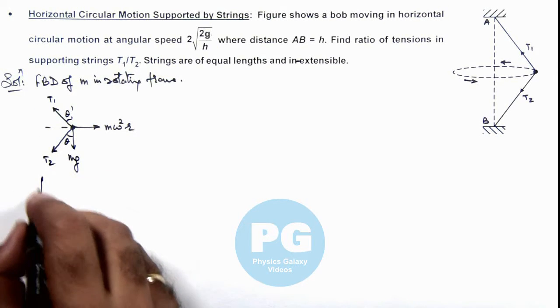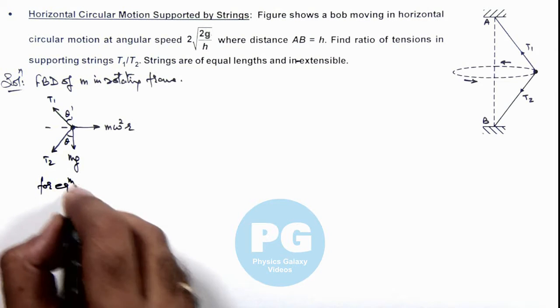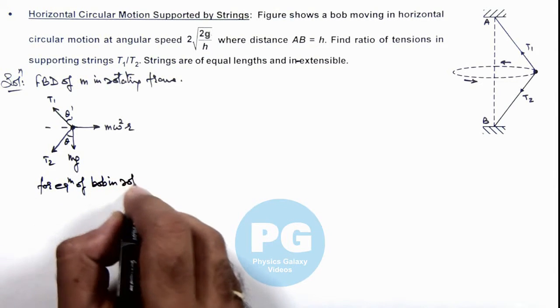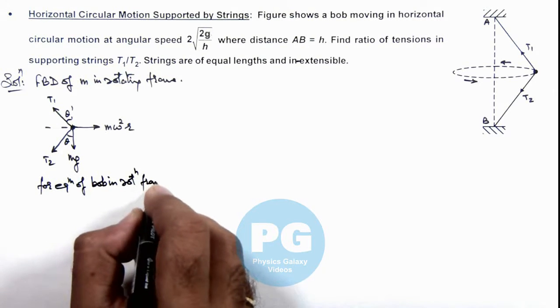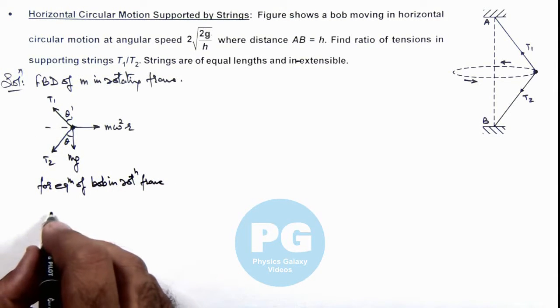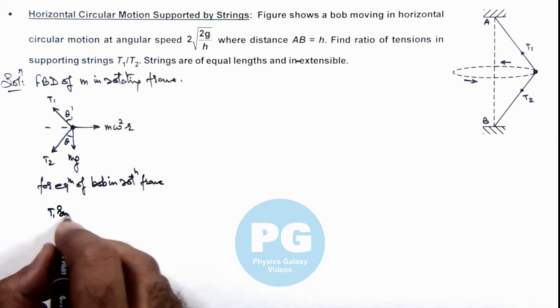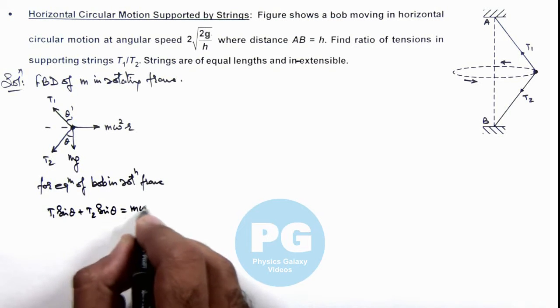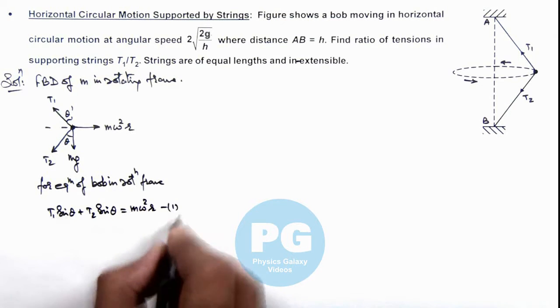We can write for equilibrium of bob in rotating frame. For its horizontal equilibrium we can write: T₁sinθ + T₂sinθ = mω²r. That is the first equation.